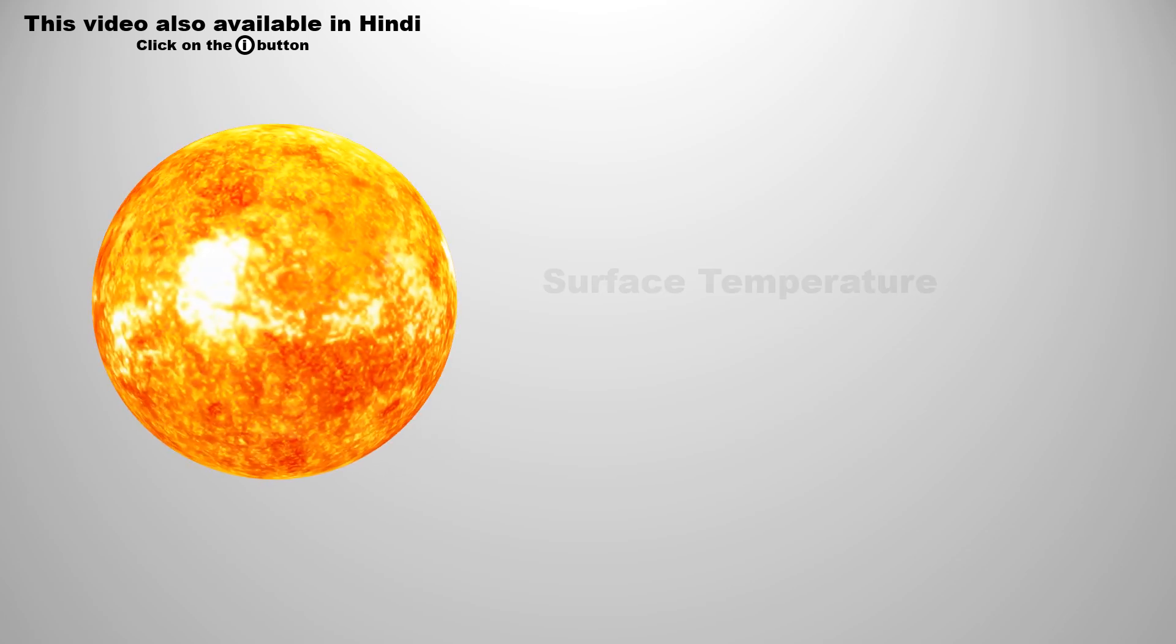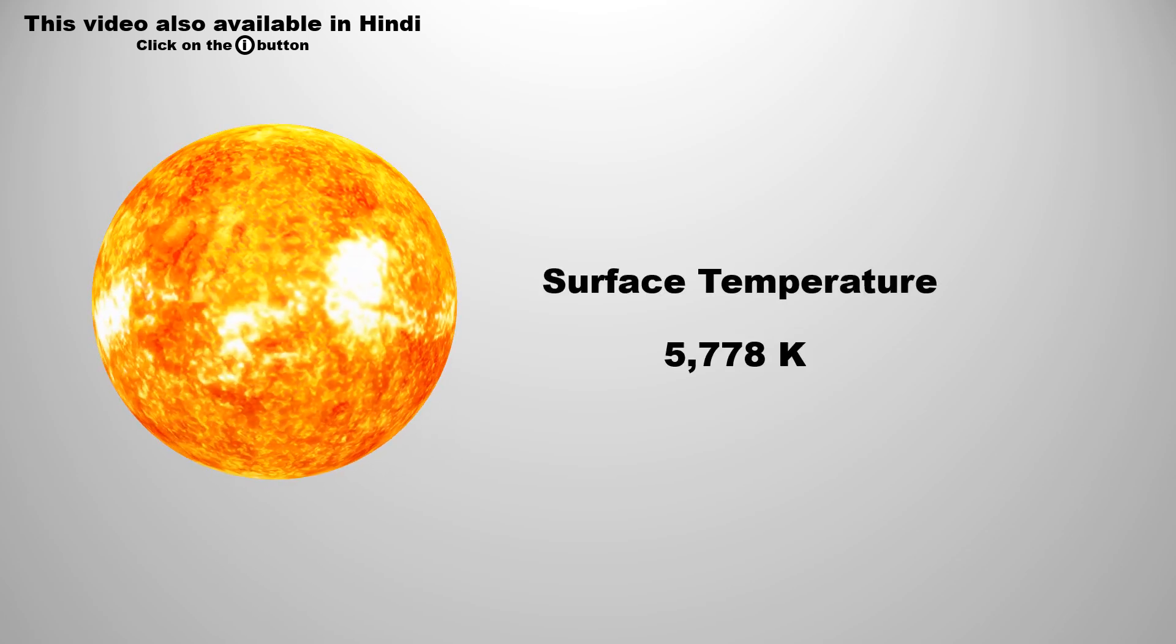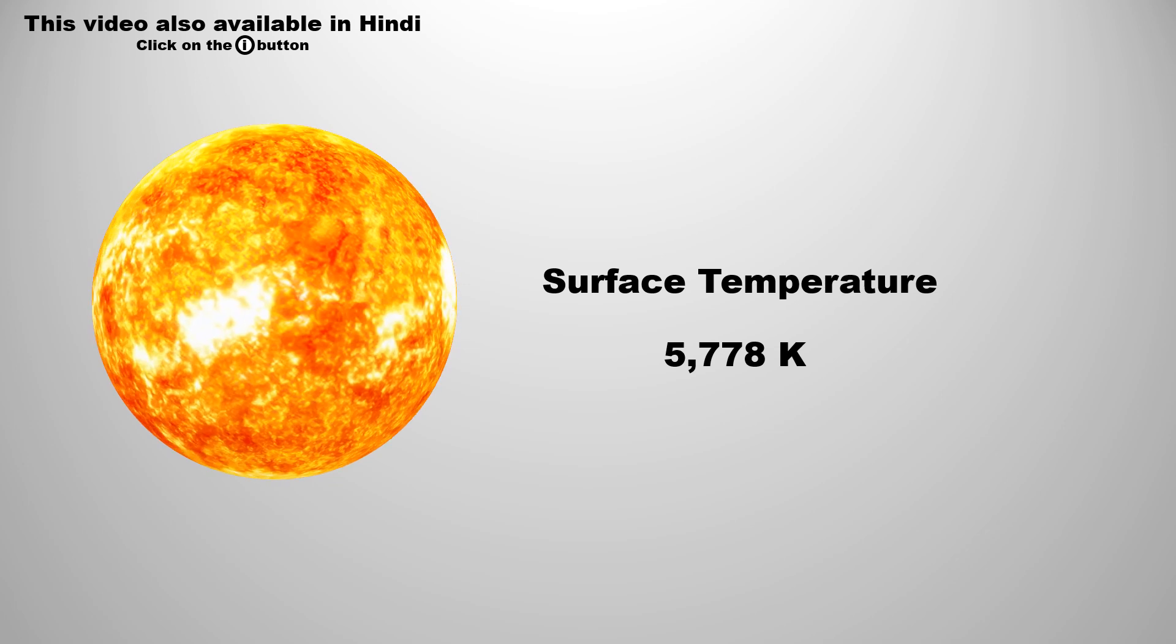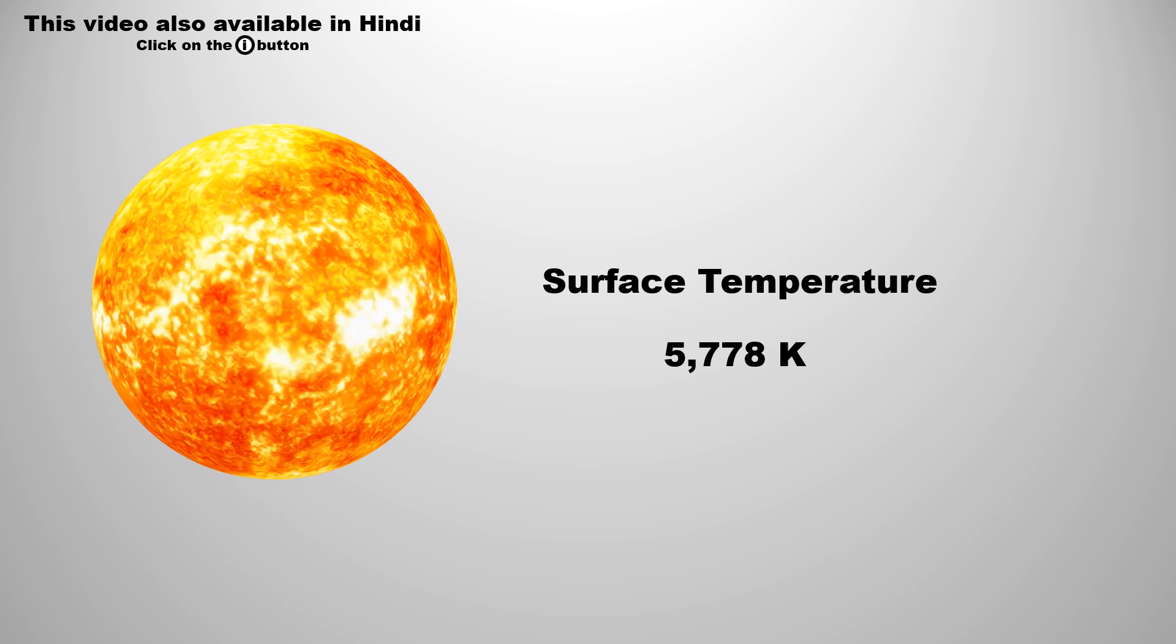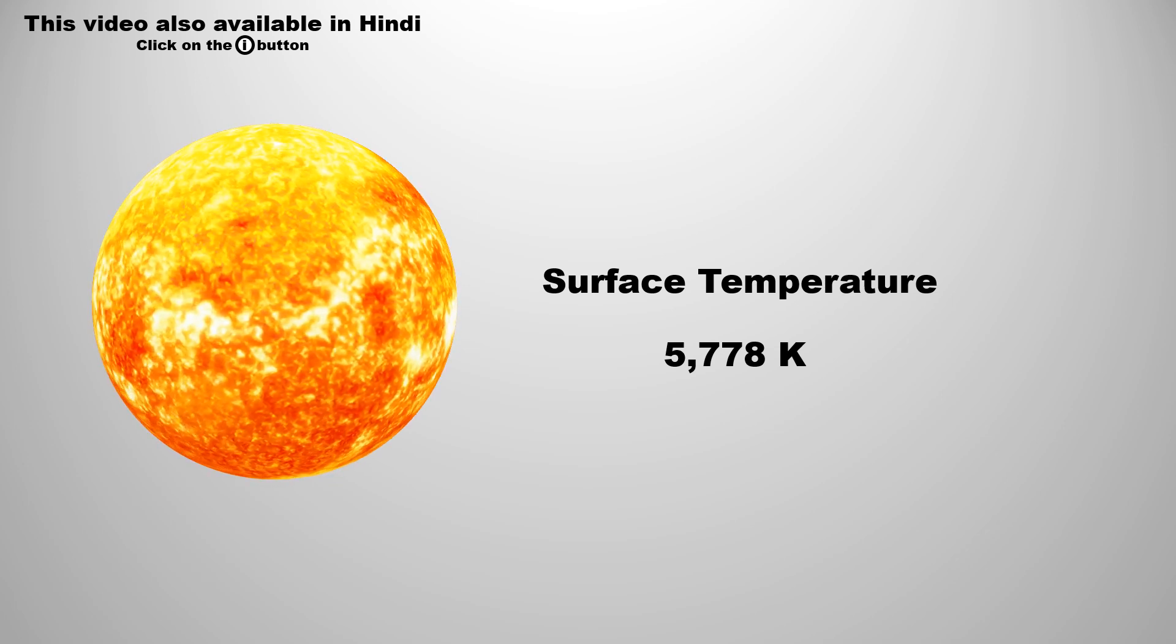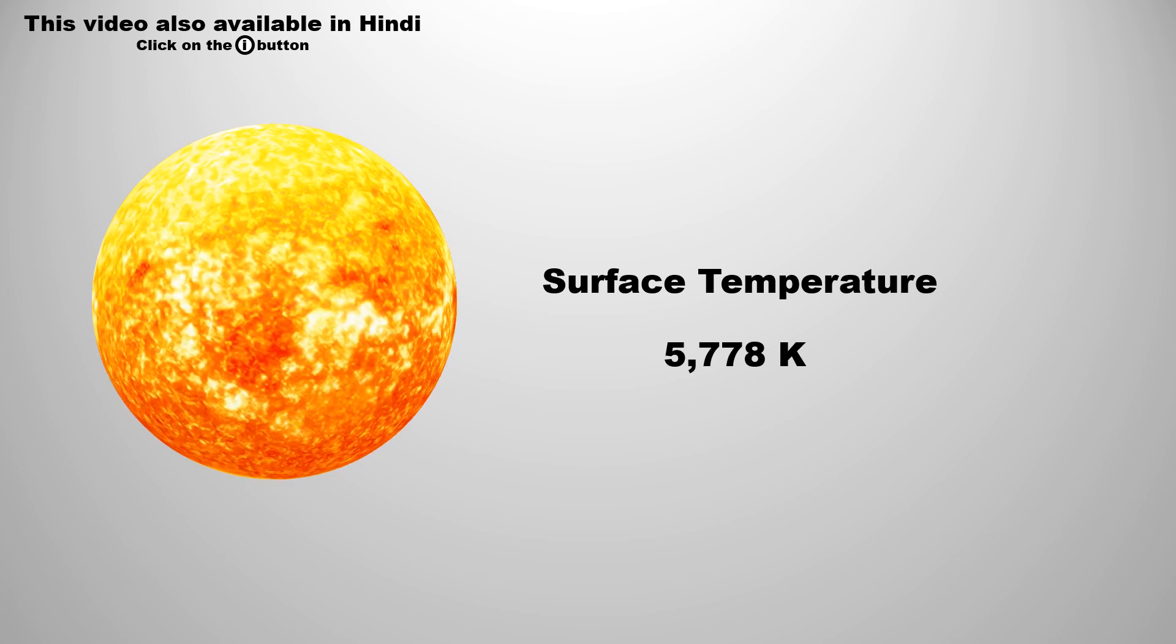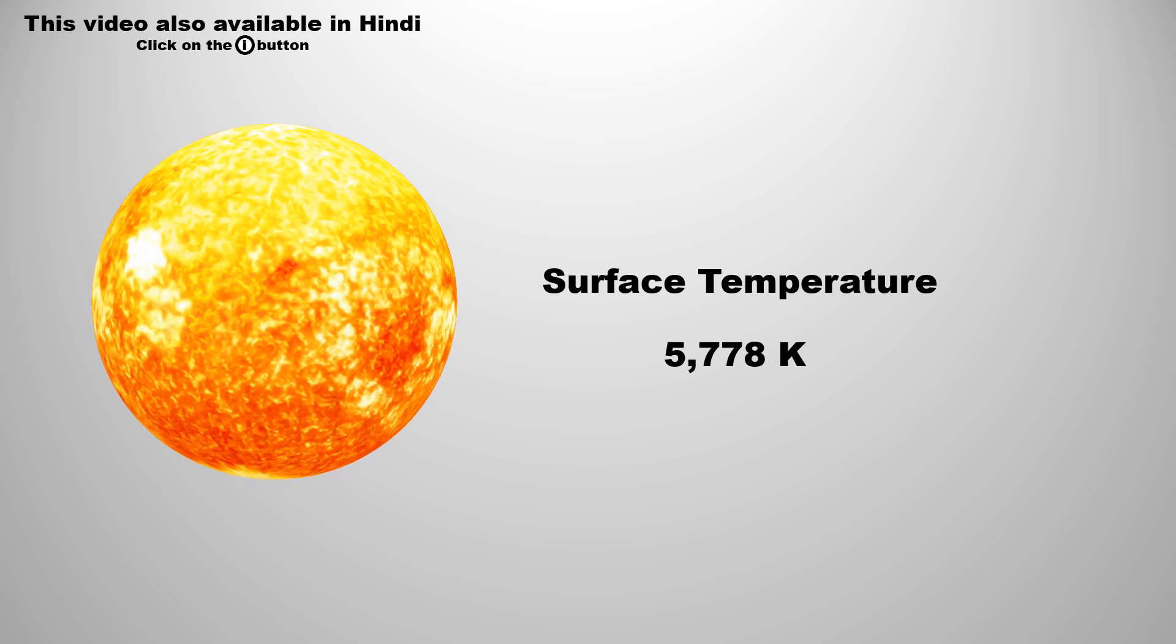According to astrophysicists, the surface temperature of the Sun in our solar system is 5778 Kelvin. Not only the Sun, but the temperature of any star present in space can be known. But how is it possible?